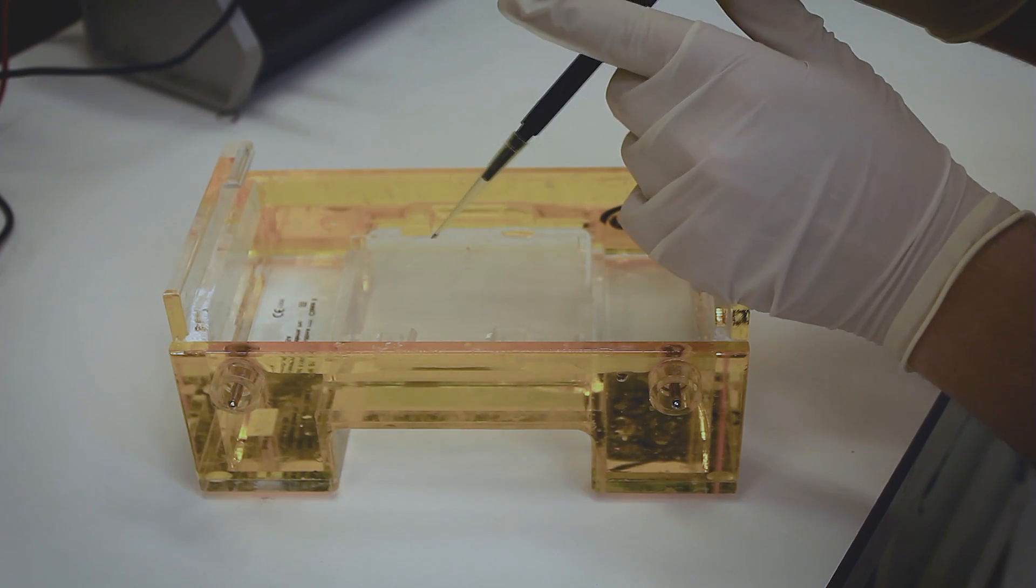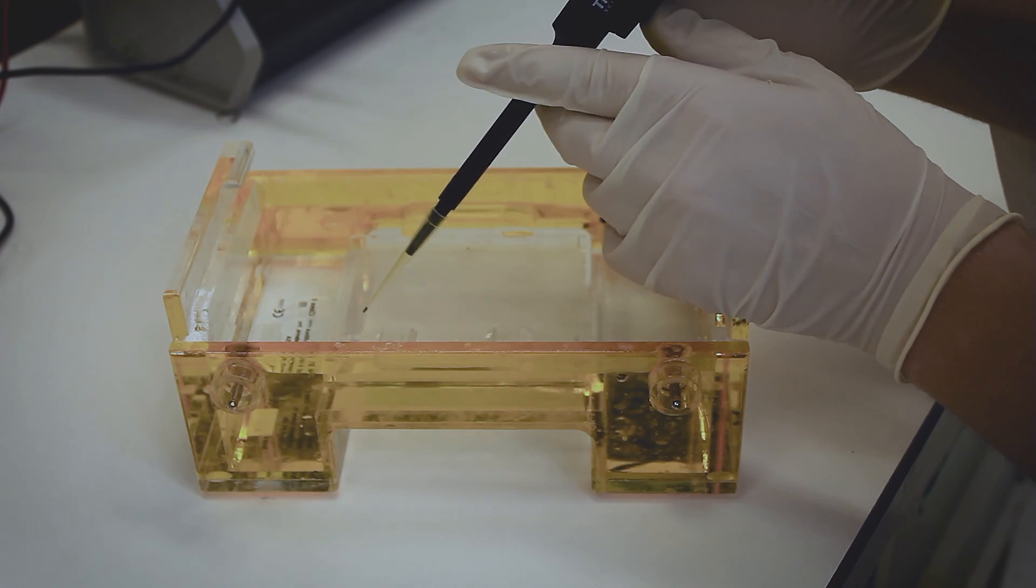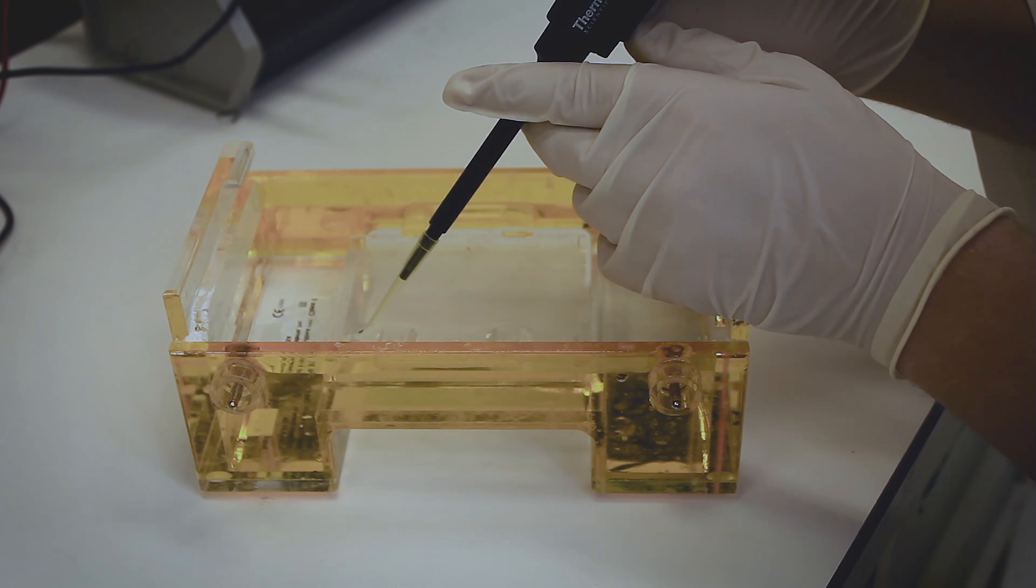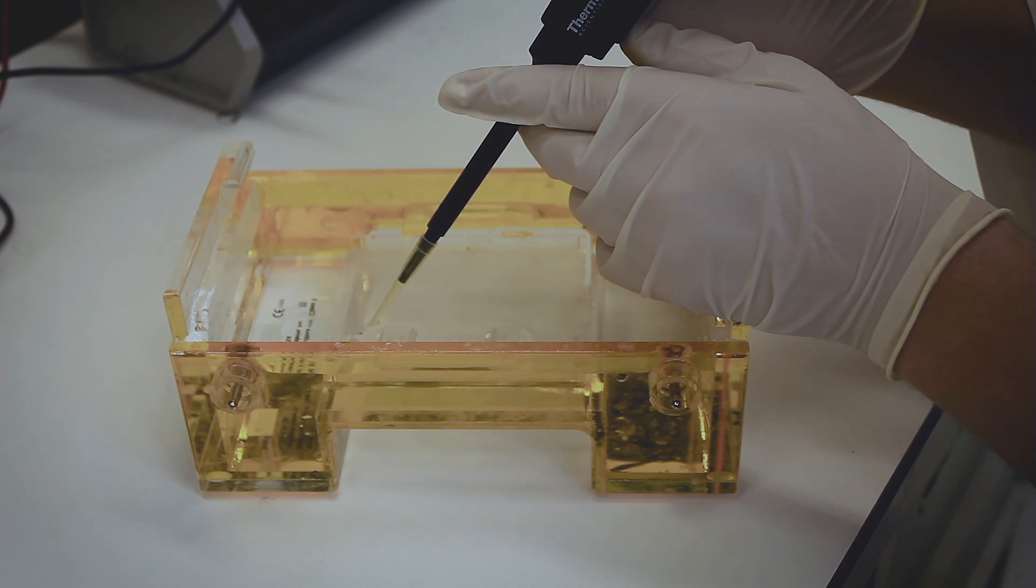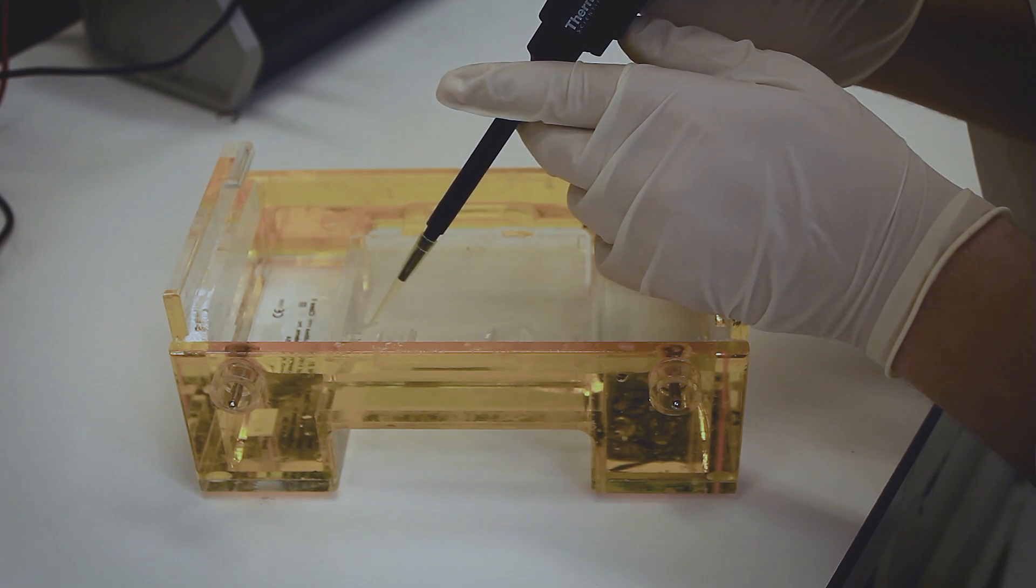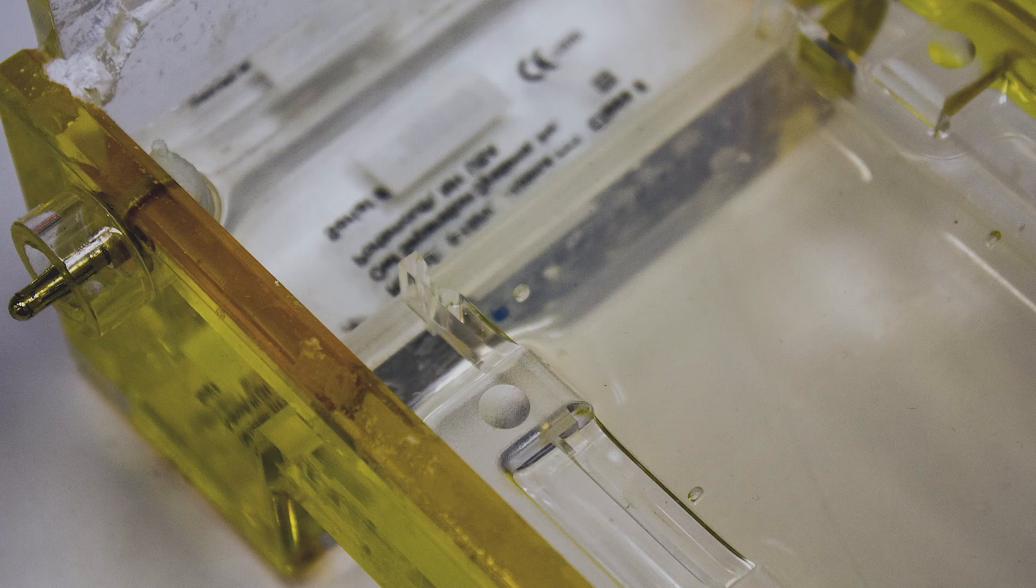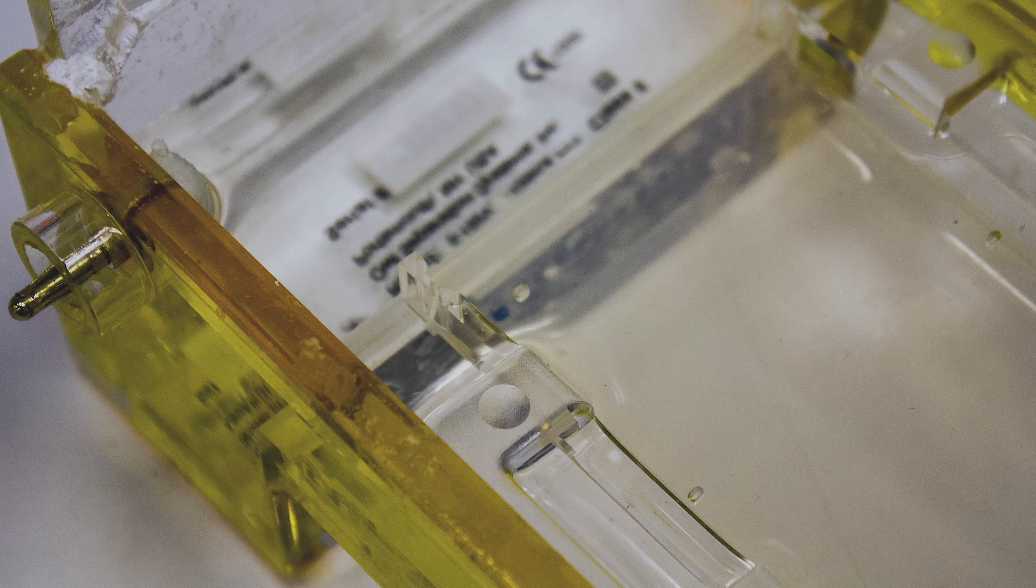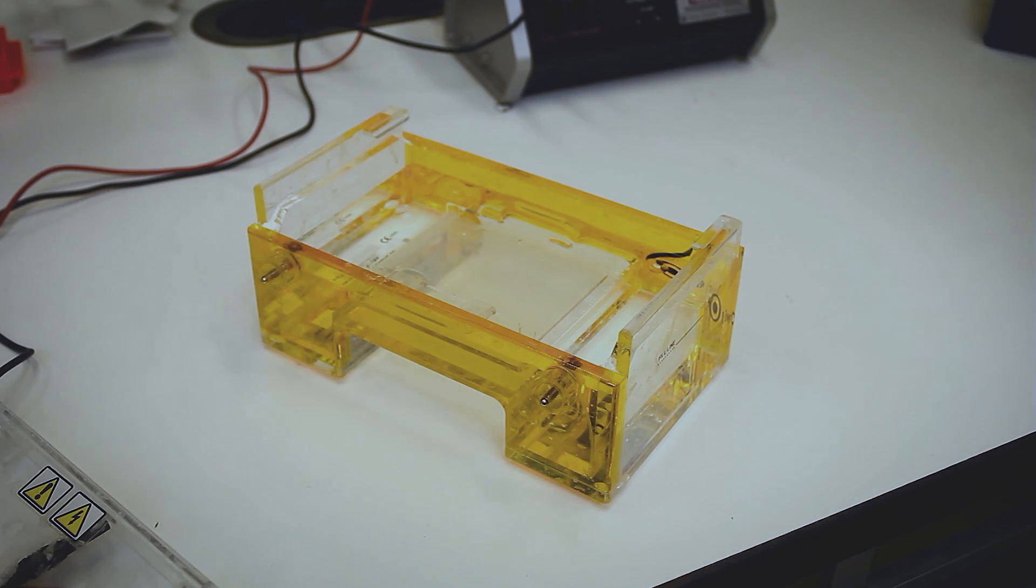Pipette 1 microliter of DNA ladder into the well furthest to the left of the agarose gel. Leaving one space between the DNA ladder and the PCR product, begin pipetting 5 microliters of product into separate wells.